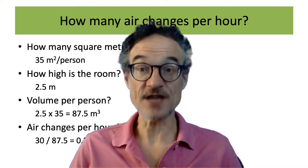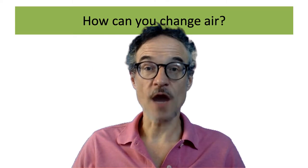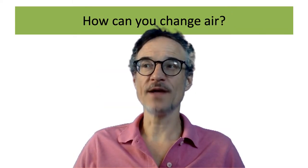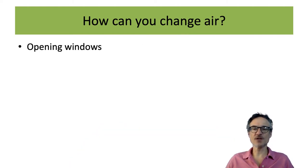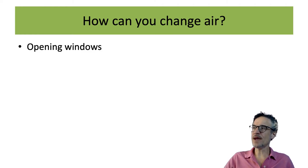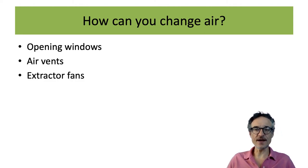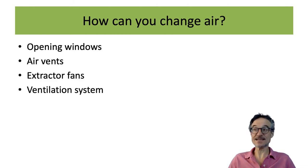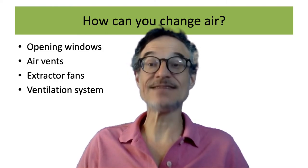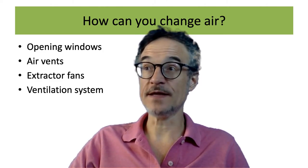The next question is how do we get this fresh air, or get rid of the old air? There are different ways to change air. One is opening windows. You may also have air vents — rather than windows you could make holes in the wall. You can use extractor fans to blow air out of the house, or you can use a more sophisticated ventilation system. Each of these has advantages and disadvantages.